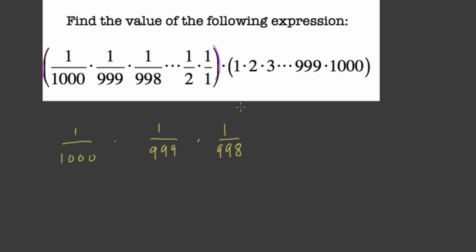And so forth. That means continue this pattern where you're always taking 1 over 1 less than the denominator before. So it's 997 and so forth, 996, all the way down to you reach 1 over 2, and then 1 over 1.